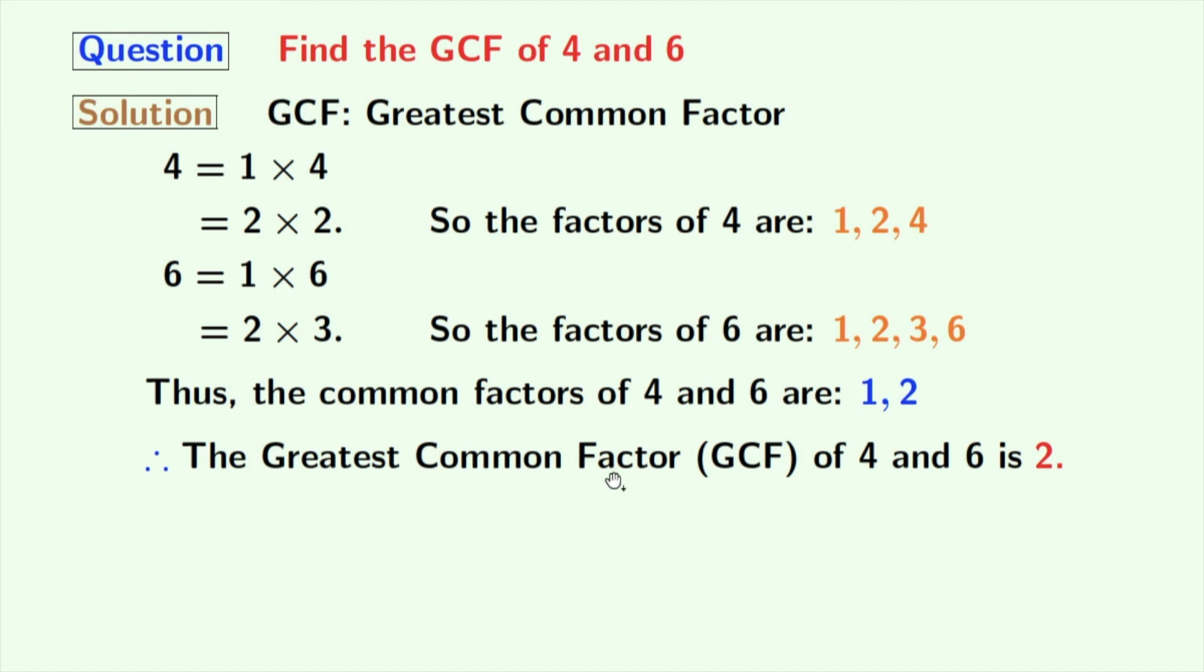So, finally, the greatest common factor of 4 and 6 is 2. Or in other way, we can say that GCF of 4 and 6 is 2.